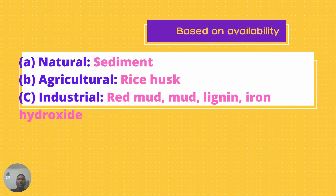Then comes classification based on availability. There are three types of adsorbents based on availability: natural adsorbents such as sediments and rock; agricultural adsorbents such as rice husk; and industrial waste such as red mud, lignin, and iron hydroxide, which are obtained from various industries.